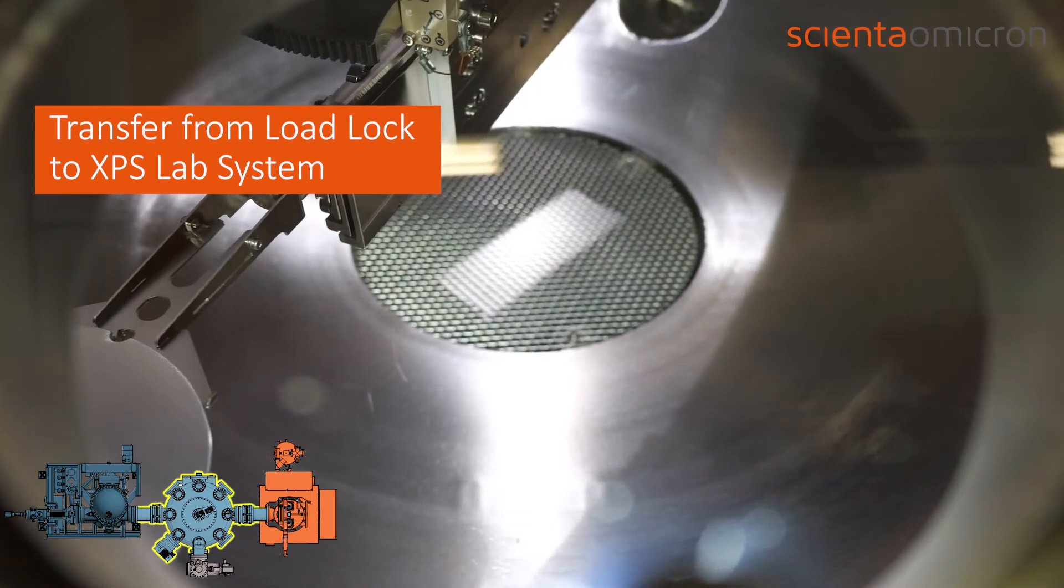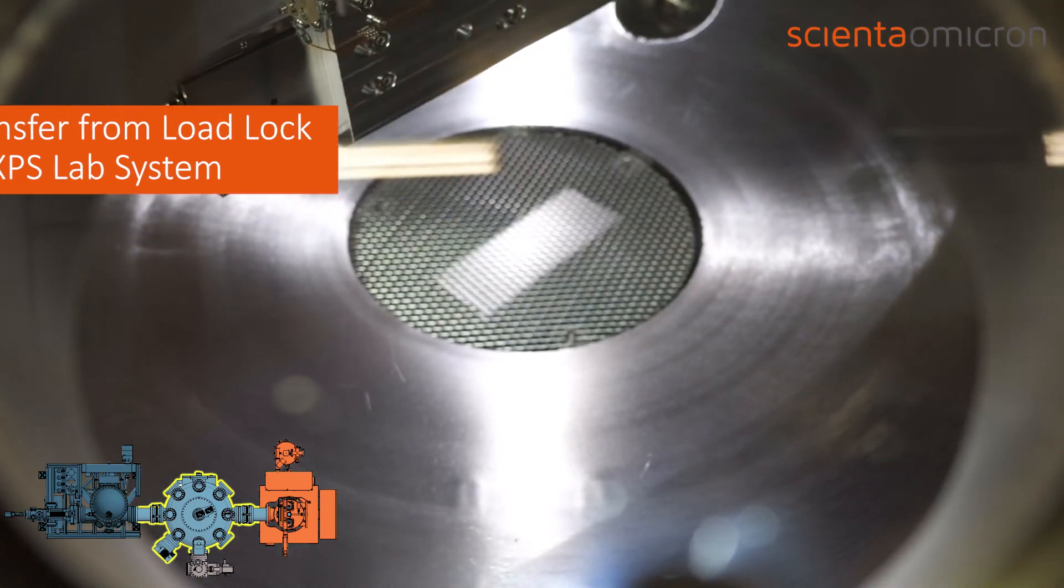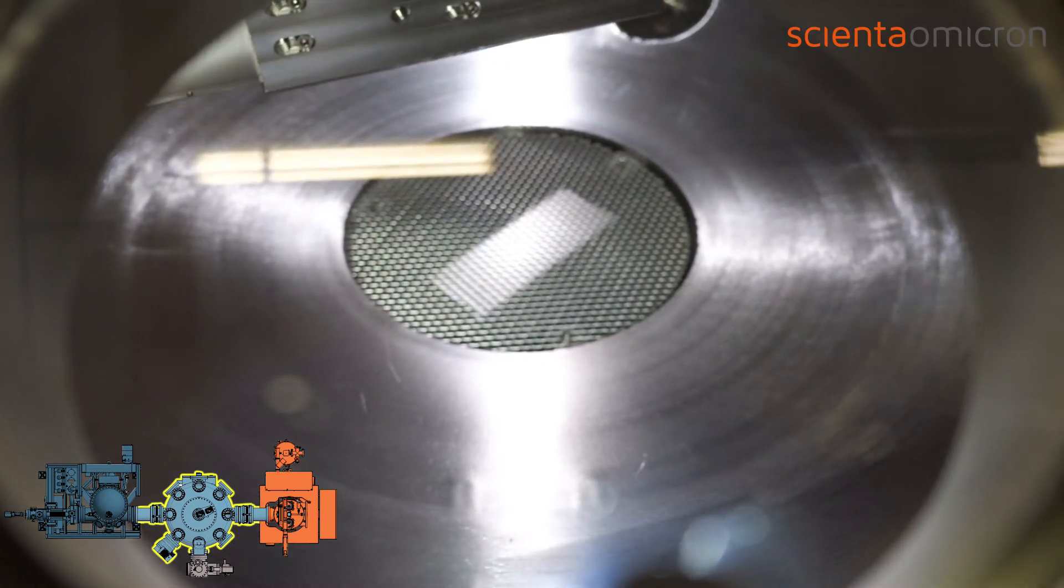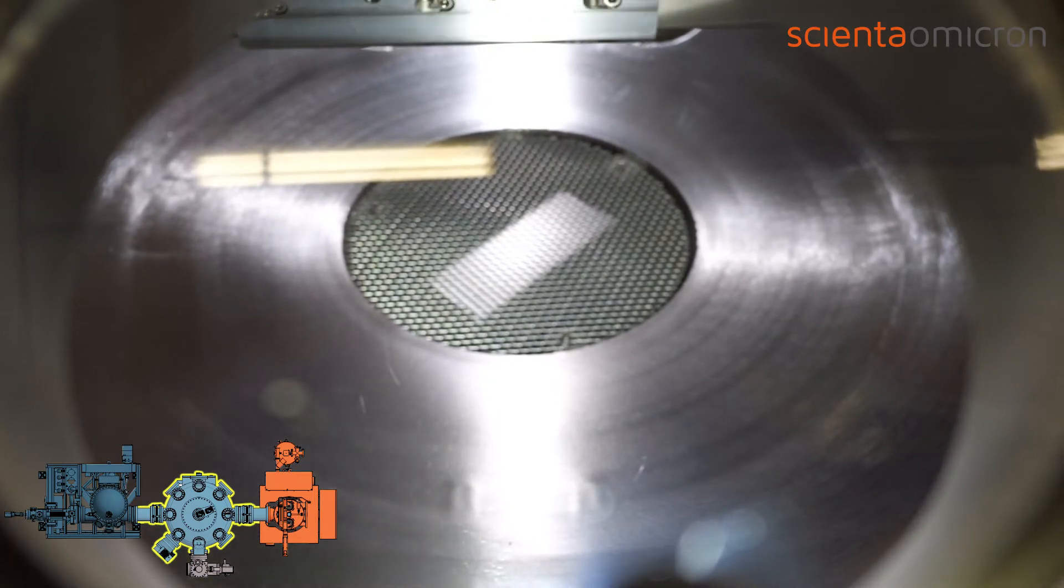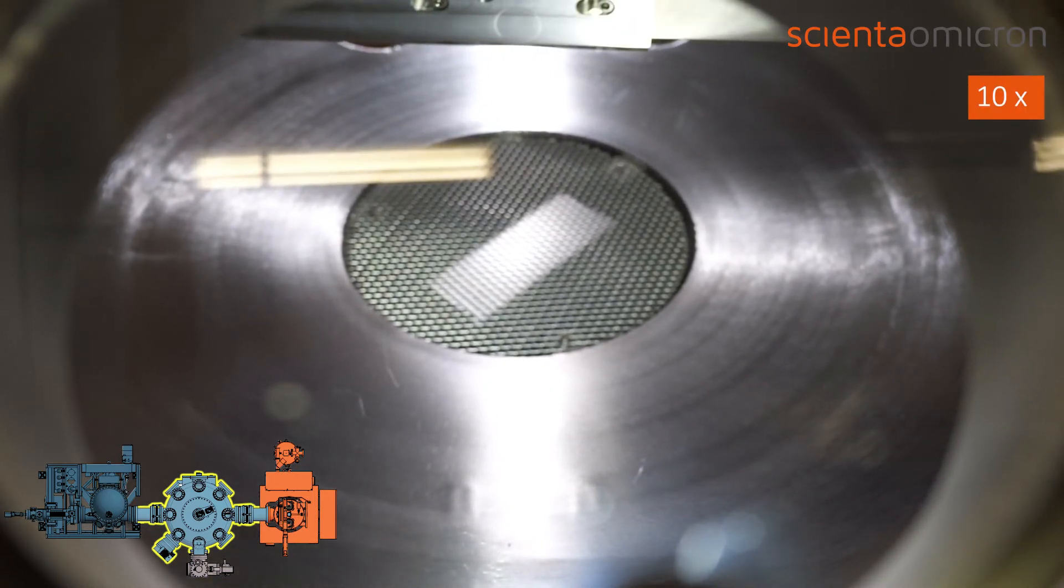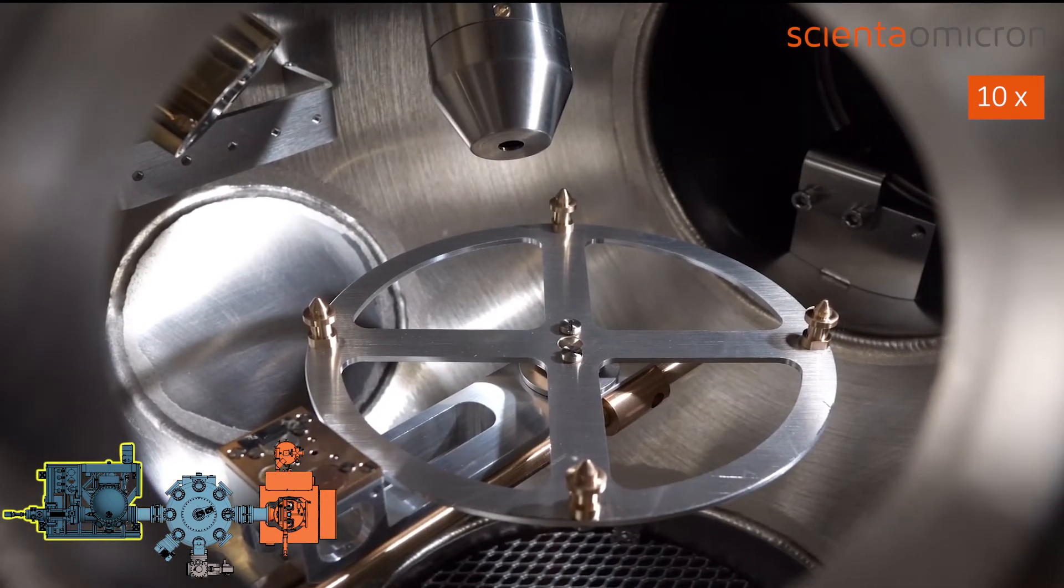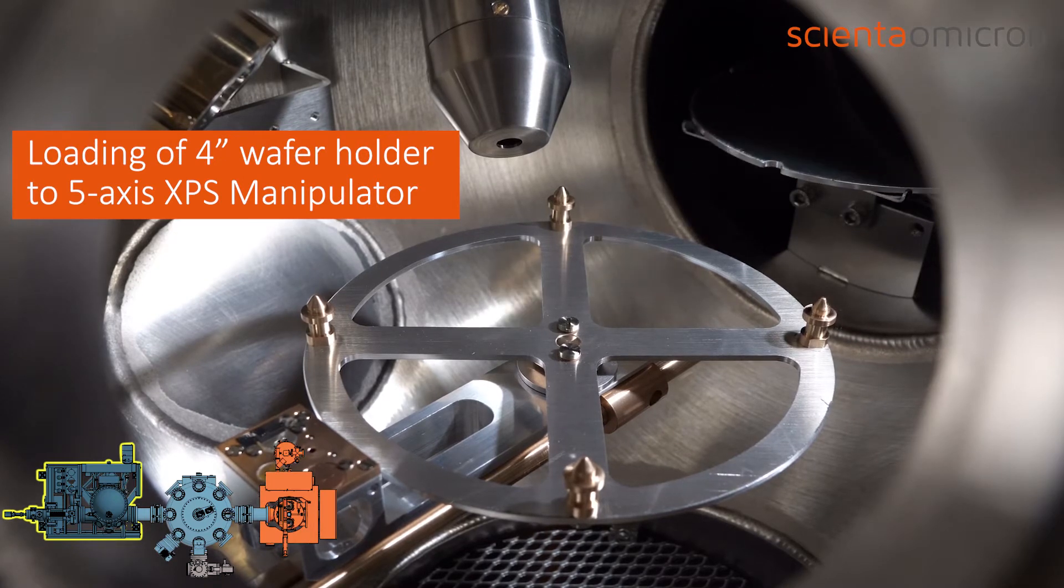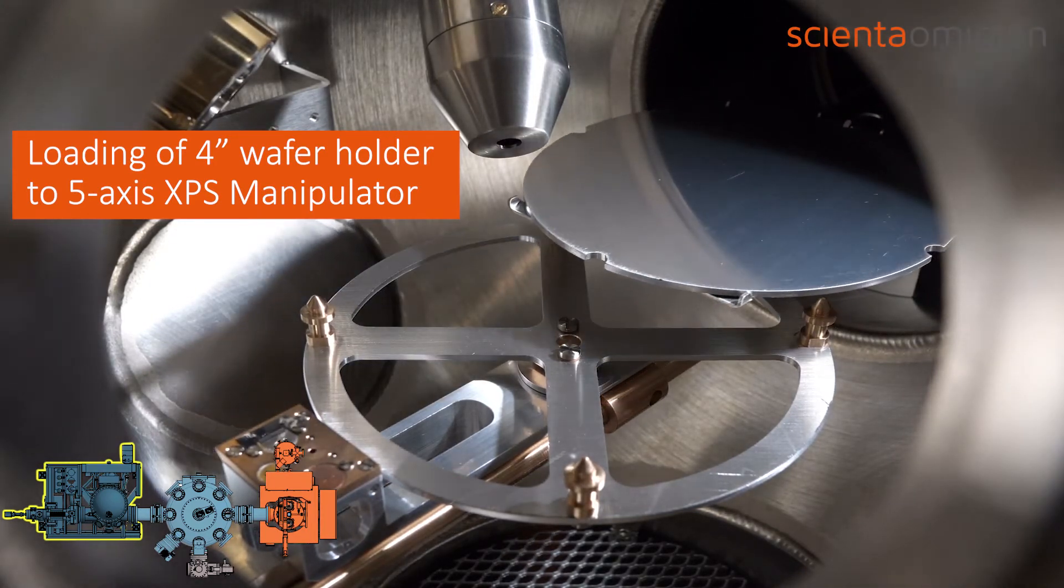The next transfer process will demonstrate how the wafer holder is loaded onto the XPS lab manipulator. After initializing the sample loading process, the robotic arm rotates towards the connection flange of the XPS lab system. When both the XPS manipulator and the robotic arm are in position, the UHV gate valve opens and subsequently the arm extends into the XPS lab chamber. The arm stops at a standby position, waiting for the user to verify that the transfer shall proceed.